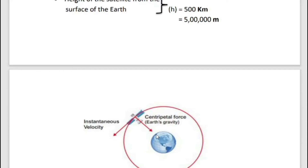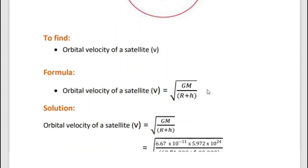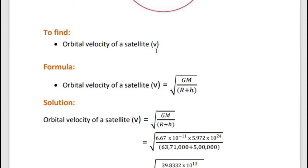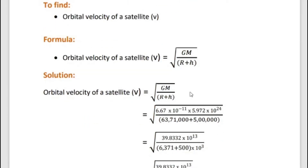The height of the satellite from the surface of the Earth is given as h = 500 km. In meter form, h = 500 × 1,000 = 500,000 m. To find orbital velocity V, the formula is V = √(GM / (R + h)), where G is the gravitational constant, M is the mass of the Earth, R is the radius of the Earth, and h is the height of the satellite from the surface.